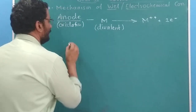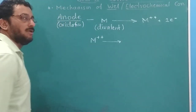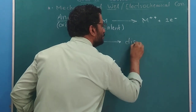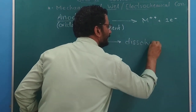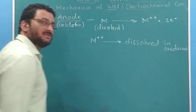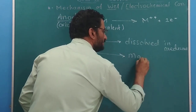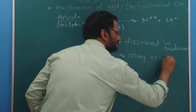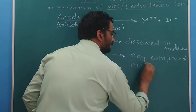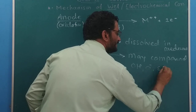What happens to these metal ions formed at the anode? They either get dissolved in the medium — that is a dissolution or decay process — or these metal ions may form compounds such as hydroxides, oxides, or sulfates.